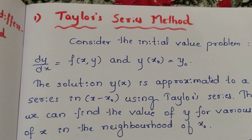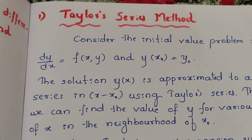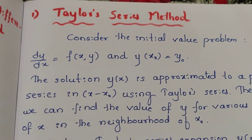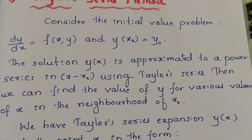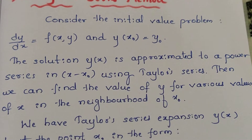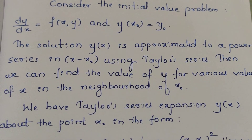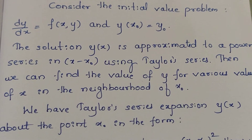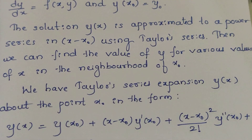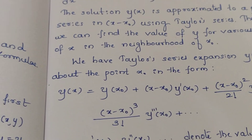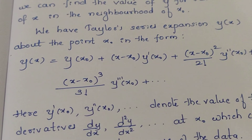Now we will study the Taylor Series Method. Consider the initial value problem: dy/dx = f(x, y) with y(x0) = y0. The solution y(x) is approximated as a power series in (x − x0) using Taylor's Series. This allows us to find the value of y for various values of x in the neighborhood of x0. The Taylor series expansion of y(x) about the point x0 is expressed as a power series.